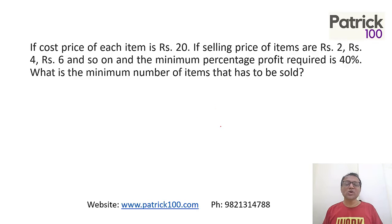Next, this is based on arithmetic progression. The cost is 20. You need a profit of 40%. So 20 plus 40% of 20 will give you 28 rupees. That means my average selling price has to be 28 rupees. Remember, in an arithmetic progression, the average is the middle term.